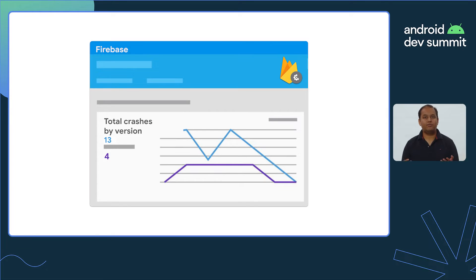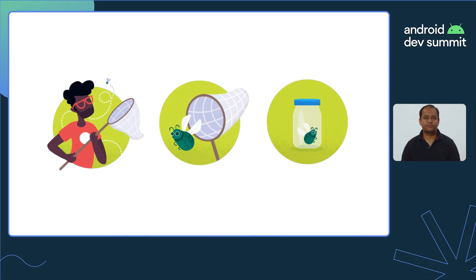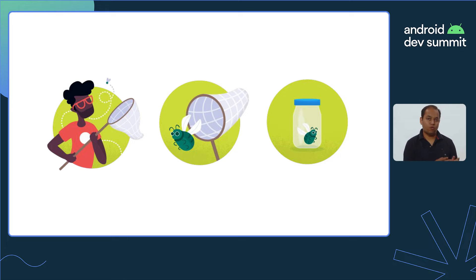A highly reliable way to find crashes in your app is Firebase Crashlytics. It gives you a complete view of your app's stability with respect to crashes. Firebase Crashlytics helps you to find and fix the most critical crashes before they start impacting a large number of users on production.